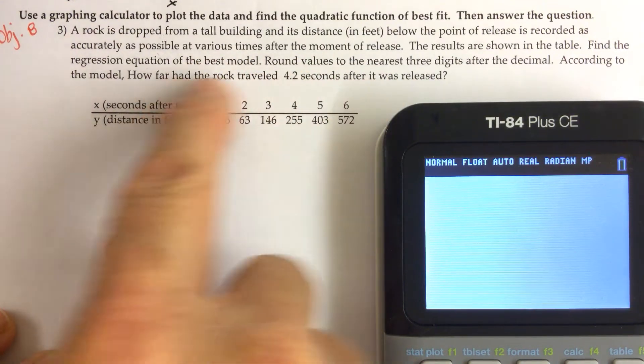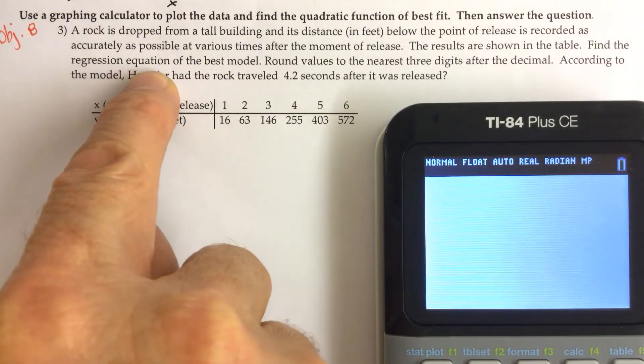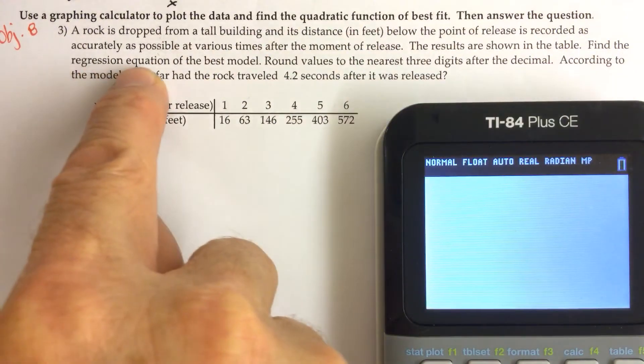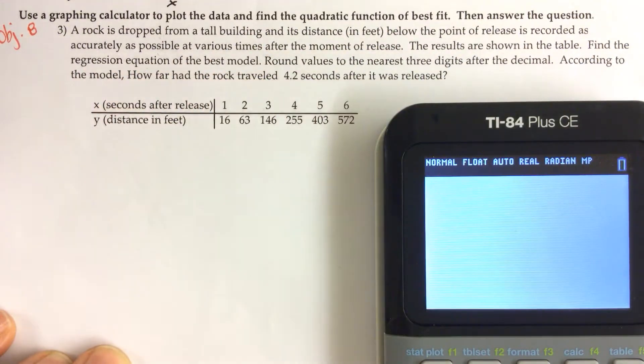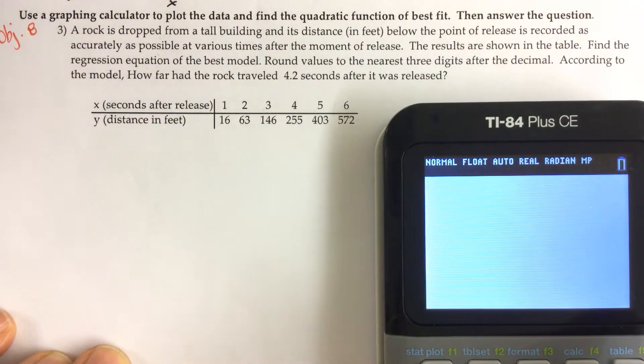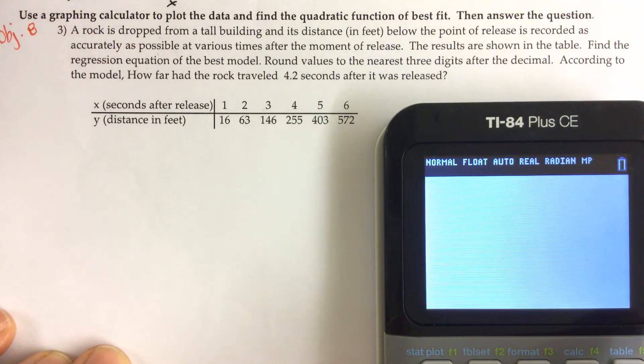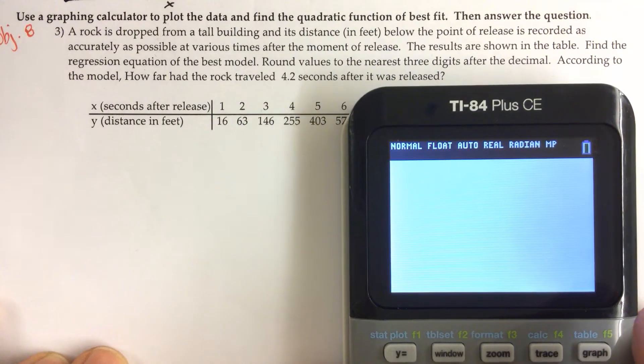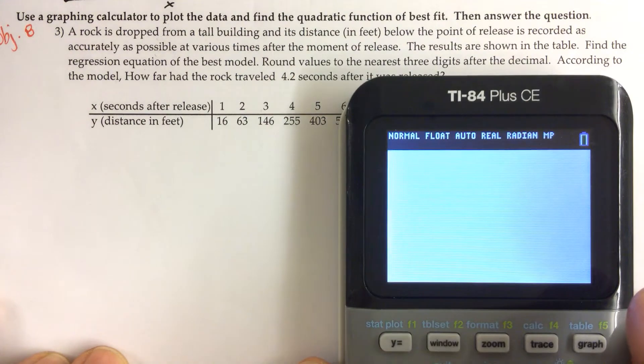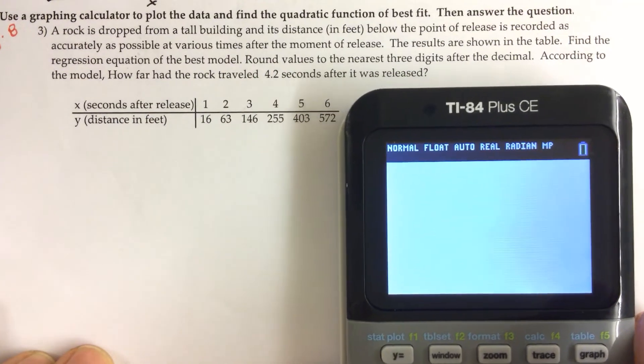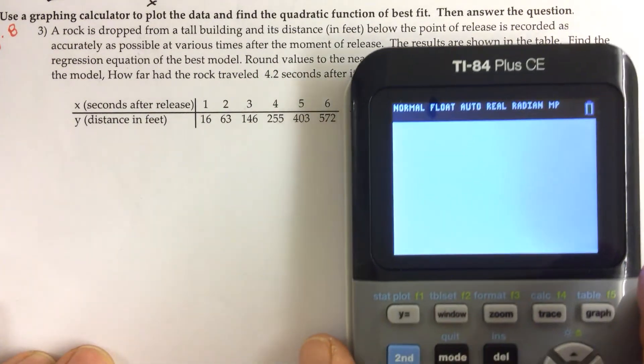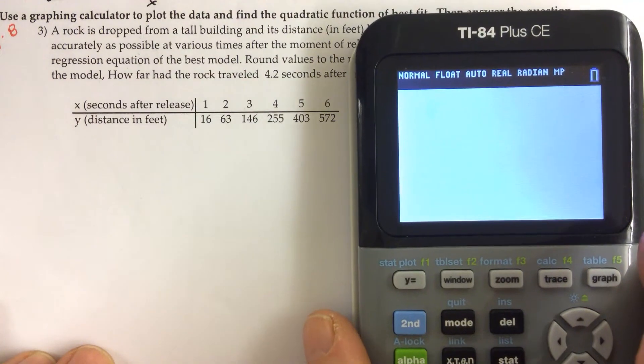First of all, we want to find a quadratic regression equation. It says find the regression equation of the best model. So we are finding the quadratic function of best fit, and I'll show you why we would do that as well. But then we have a question after that. So let's go ahead and get the model.